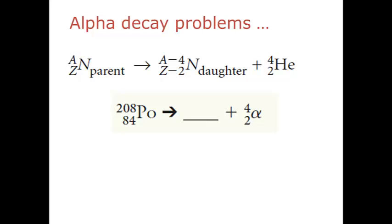In the first problem, polonium-208 will decay to form lead-204. We know it is lead since the atomic number of polonium-84 minus two equals 82, which according to your periodic table is lead. The process is reversed in the last problem, where you add four to the mass number of astatine, and two to the atomic number, to get francium-211.